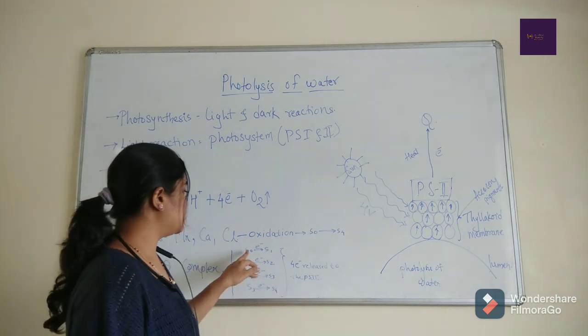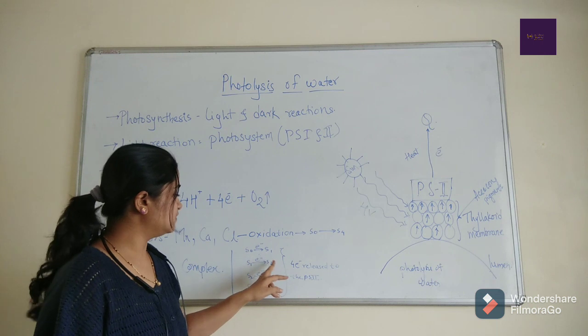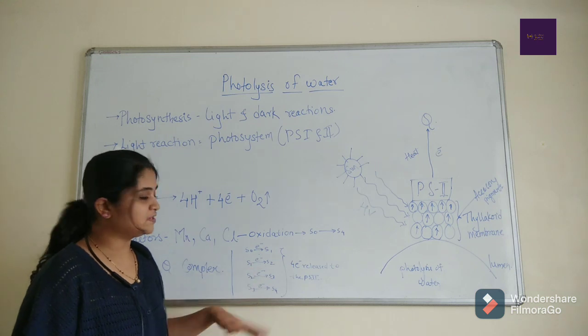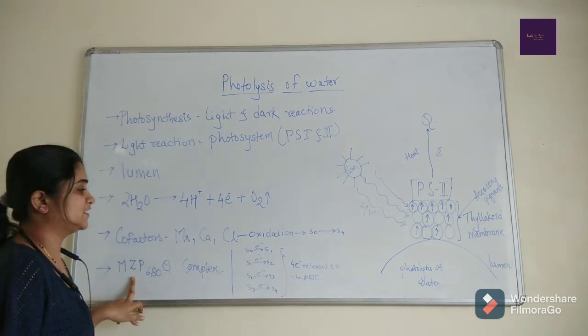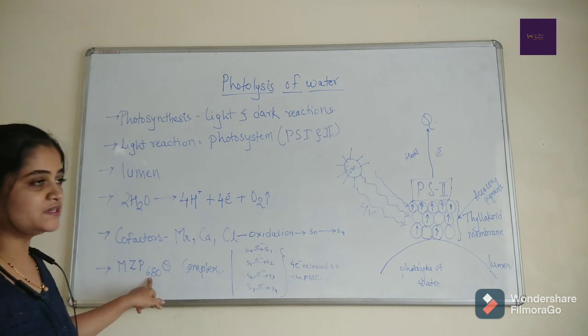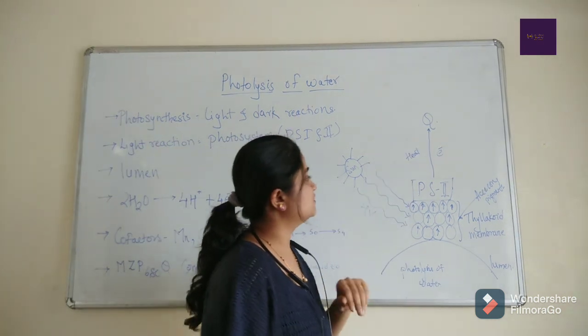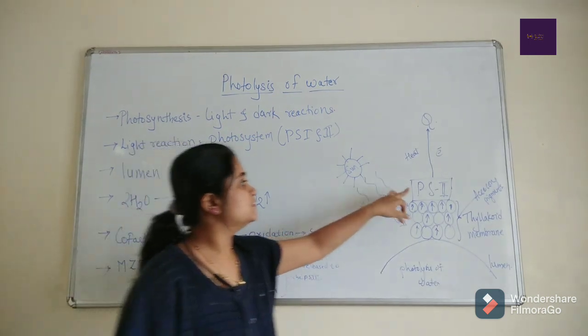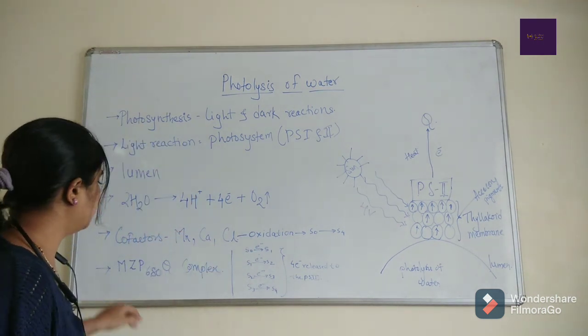S0 to S1 donates one electron to the PS2, S1 to S2 donates another, S2 to S3 donates another, and S3 to S4 transfers the last electron to the PS2 with the help of the Z factor. It transfers to P680, that is photosystem 2. Lastly, when it jumps or excites because it gets high energy to the reaction center, then the electron is accepted by the Q factor. Q is nothing but pheophytin, the primary electron acceptor.